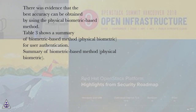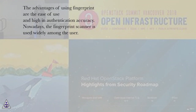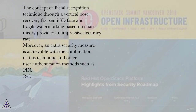There was evidence that the best accuracy can be obtained by using the physical biometric-based method. Table 3 shows a summary of biometric-based method — physical biometric — for user authentication. Fingerprint is the most famous feature in biometric-based methods and has shown the best performance among others. Some approaches under fingerprint include the edge-based approach, the rule-lining approach, and the technique of image preprocessing region segmentation. The advantages of using fingerprint are ease of use and high authentication accuracy. The concept of facial recognition through vertical pose recovery, fast semi-3D face, and fragile watermarking based on chaos theory provided an impressive accuracy rate.